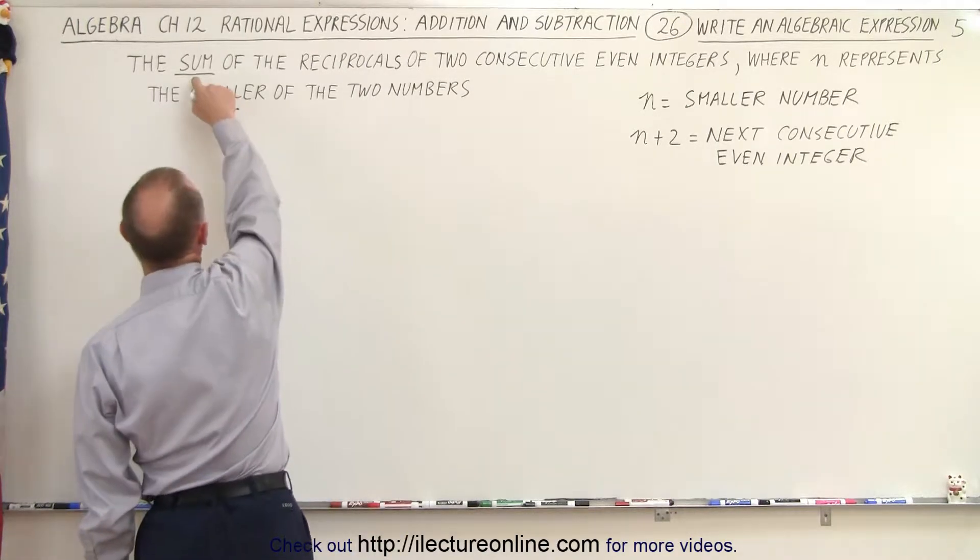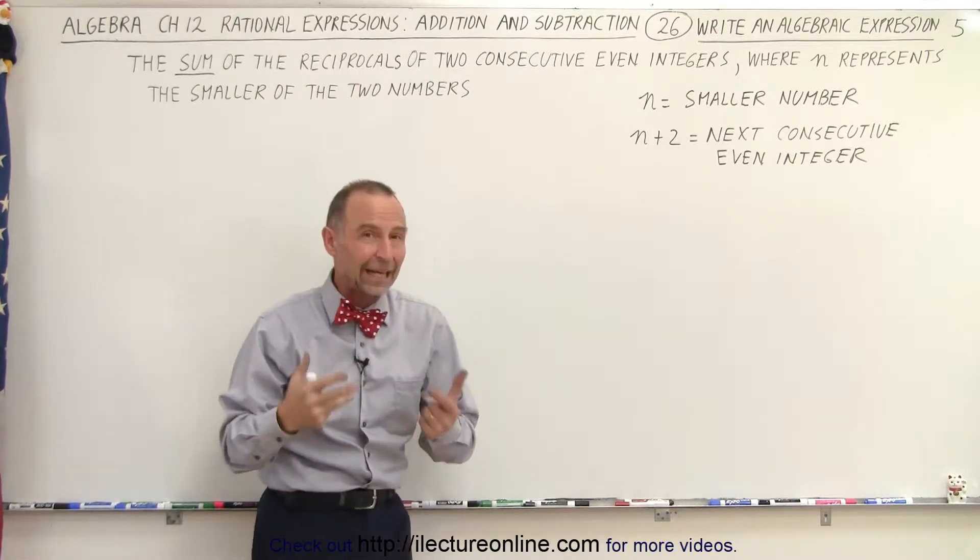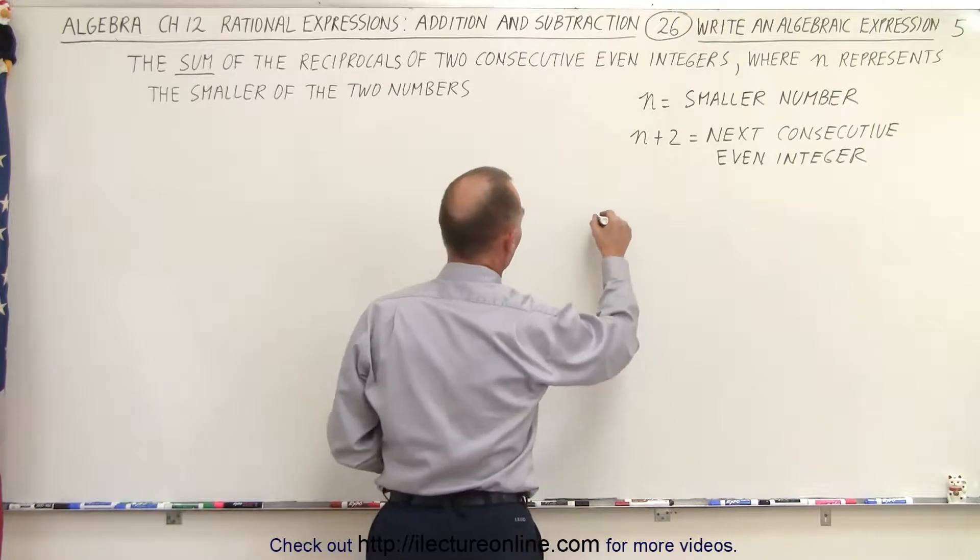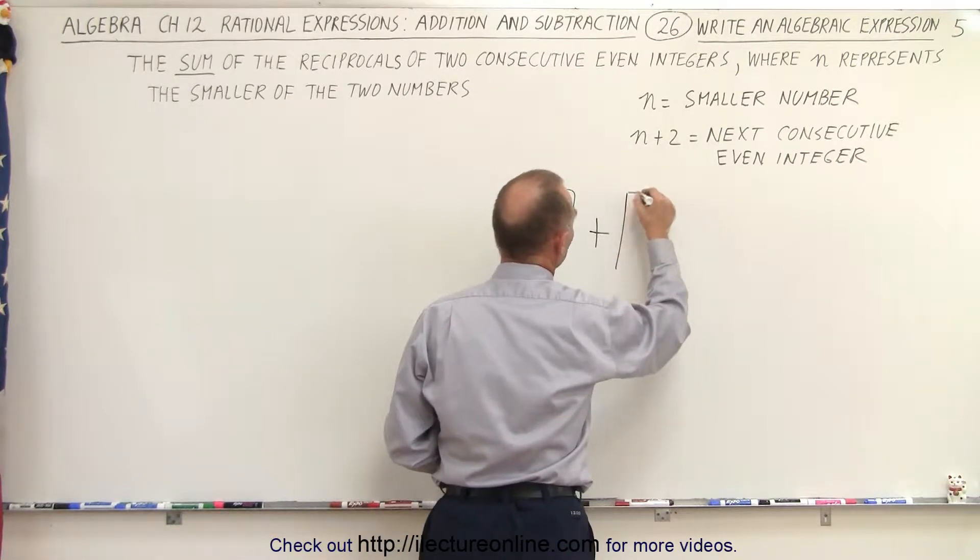So now we need to write the sum of the reciprocals of two consecutive even integers. It sounds like we're adding two things together. So we have a plus sign and two boxes representing the two things that we're going to be adding.